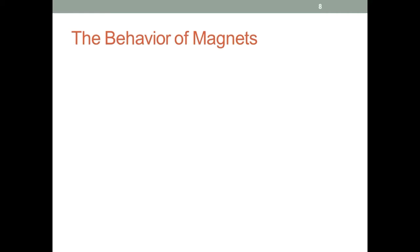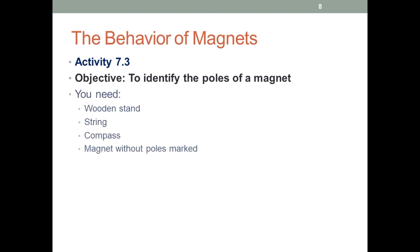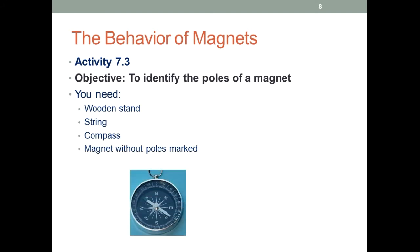To understand the behavior of magnets, we will do Activity 7.3. The objective of this activity is to identify the poles of a magnet. You will need a wooden stand, a string, a compass, and a magnet without poles marked. First, use the compass and mark the north and south on the table.